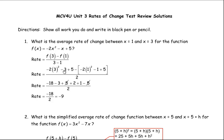Expanding and simplifying: 3 squared is 9 times negative 2 is negative 18, then minus 3 plus 5. For f(1): 1 squared times negative 2 is negative 2. When you take the brackets off, subtracting negative 2 is plus 2, subtracting negative 1 is plus 1, and subtracting 5 is minus 5. The 5 and negative 5 cancel to zero. So it's negative 18 minus 3 plus 2 plus 1. The 2 and 1 add to 3, and negative 3 adds to 0. So it's negative 18 over 2, giving negative 9 — that's the average rate of change between x equals 1 and x equals 3.